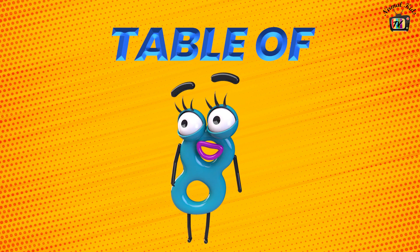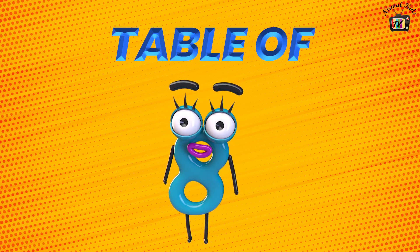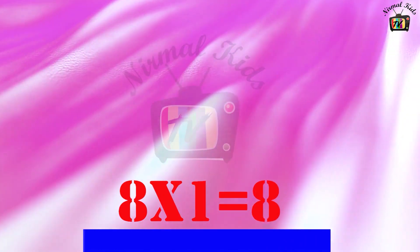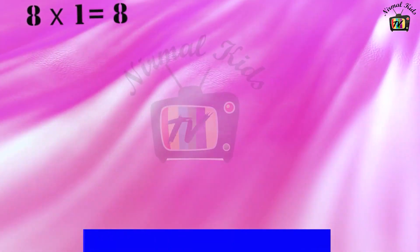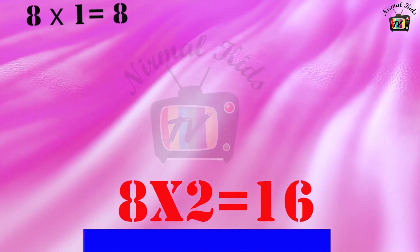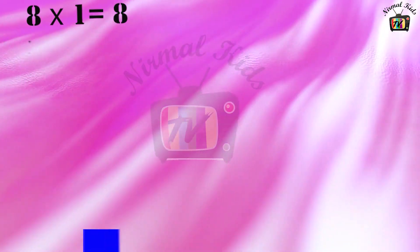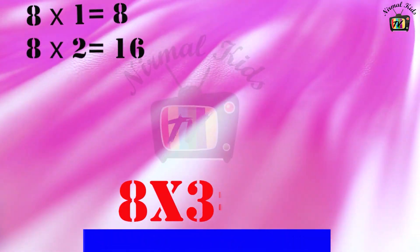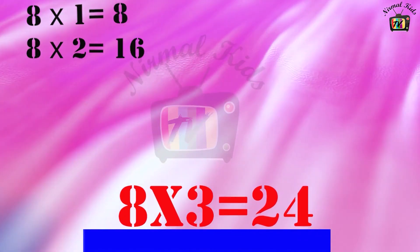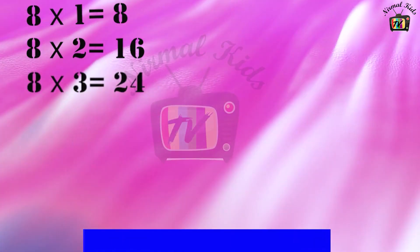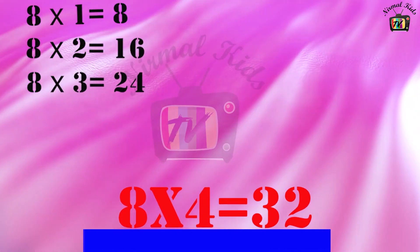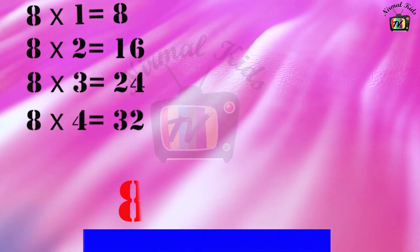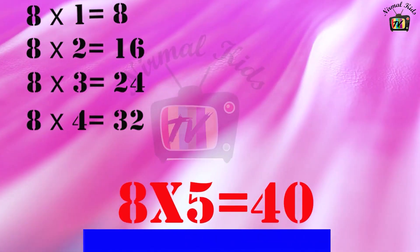Table of 8. 8 1's are 8. 8 2's are 16. 8 3's are 24. 8 4's are 32. 8 5's are 40.